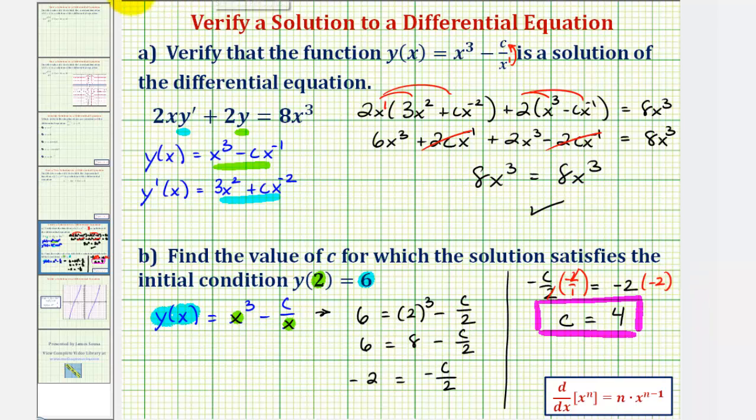But it also tells us that particular solution, y of x would be y of x equals x to the third minus four divided by x.